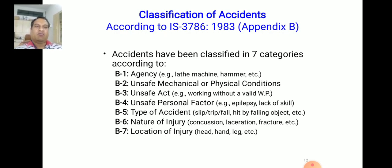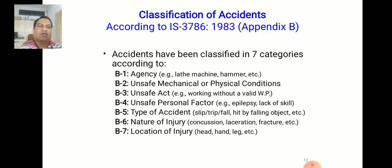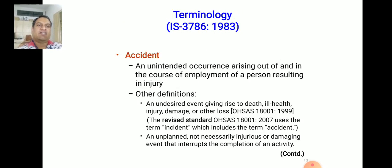Nature of injury may be concussion, laceration, fracture, etc. — describing what effect the accident had, such as a hair fracture, major fracture, or minor fracture. Location of injury classifies where the injury occurred: at the wrist, hand, elbow, finger, thumb, or major body parts such as the hand, body, legs, or head. These are the different categories of accident classification as per Appendix B of IS 3786.